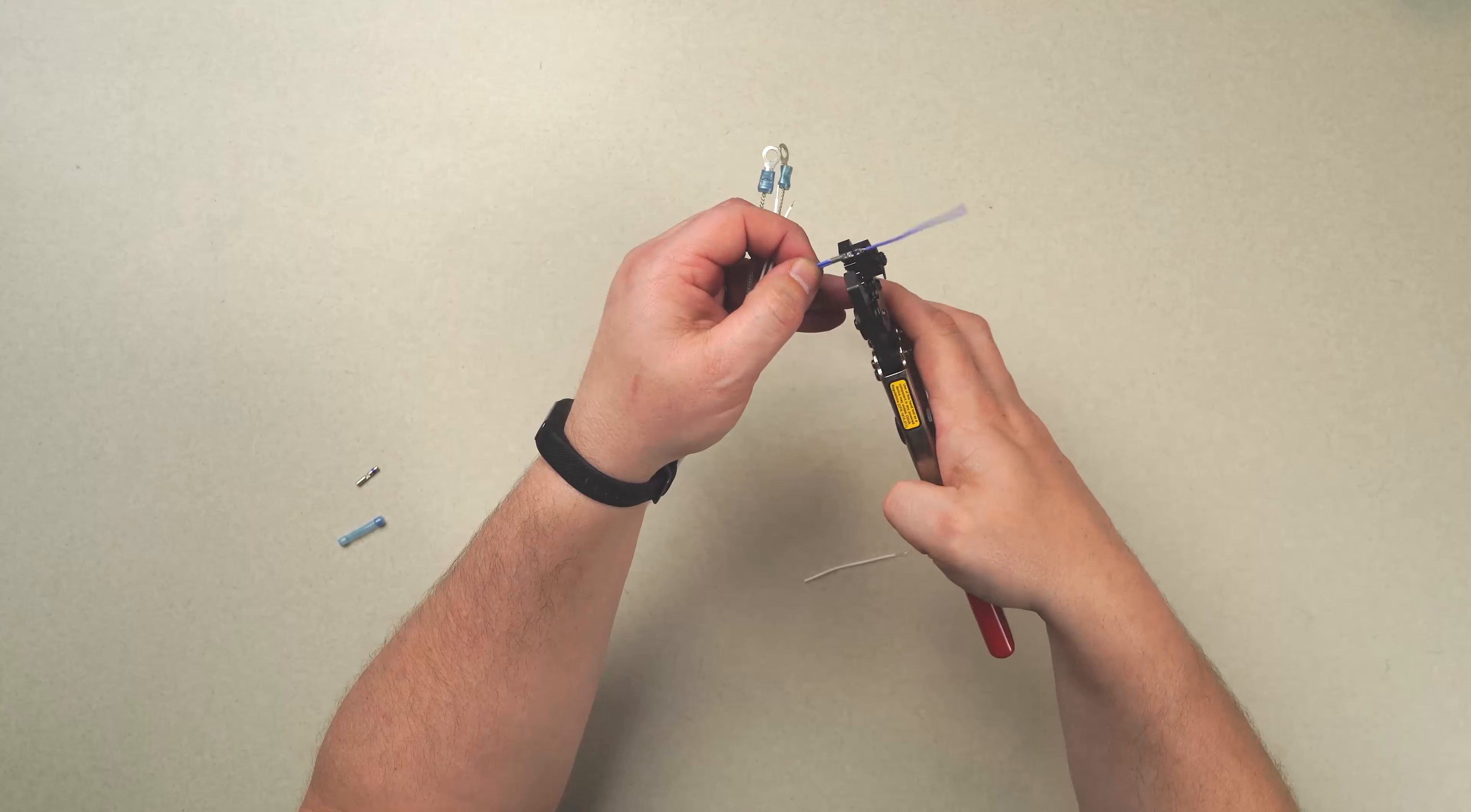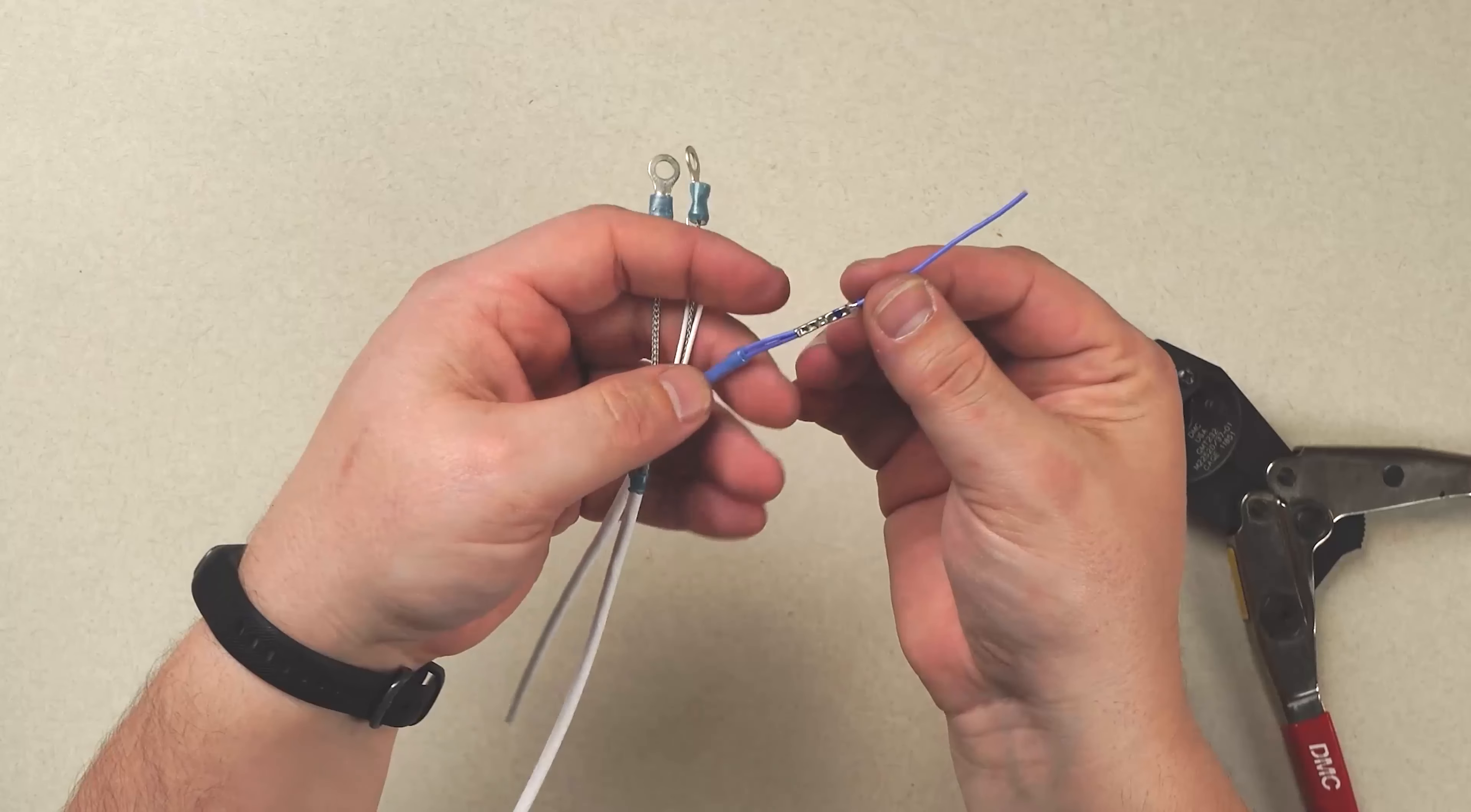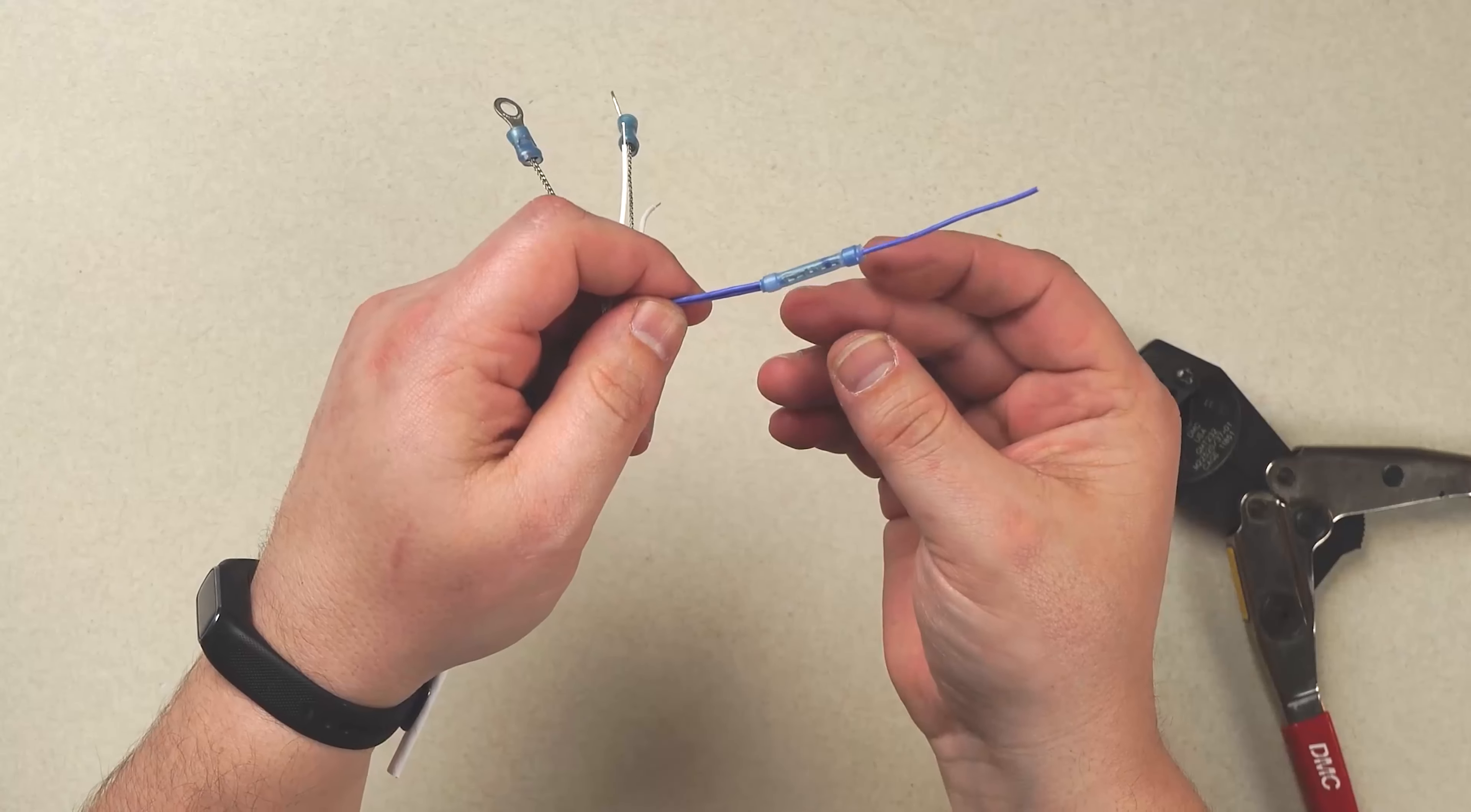We then put them in the tool and execute our crimp. We can see here we've got maximum engagement, and when we cover it all up, we're ready to apply our heat.